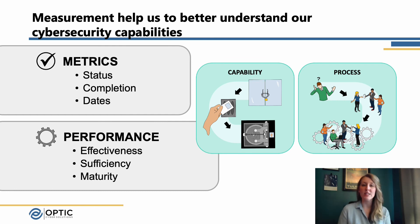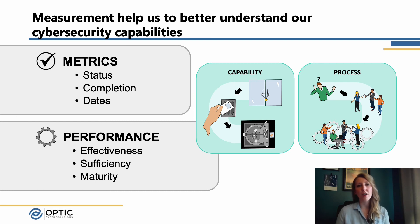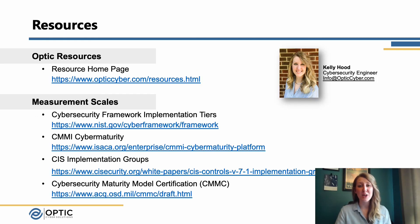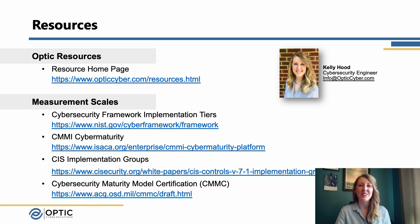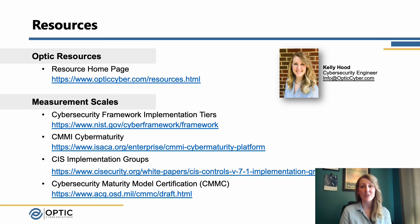Wrapping it all up, there are a lot of different ways we can measure cybersecurity capabilities and outcomes using both metrics and performance, as well as capabilities and process. We really need to think about what it is we're trying to get at — what is the outcome we're looking to achieve — and that can help us figure out if what we're doing makes sense for our organization and what we need to measure to get the data we need. I hope you found this video helpful. I've included a few resources, so feel free to dive in and take a look. Thank you for watching, and please let me know if you have any questions. My name is Kelly Hood — have a great day.